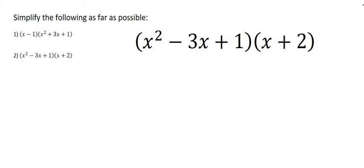So we know that this x squared will eventually have to multiply with the x and with the 2. So let's start off by multiplying x squared with x. If you multiply those two together, you end up with x to the power of 3. Next will be x squared multiplied with positive 2, which is just positive 2x squared.